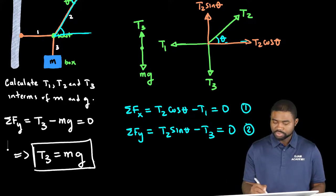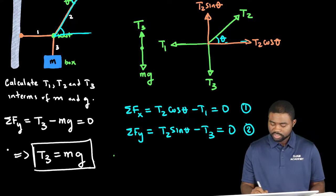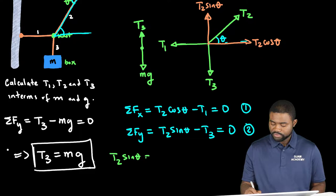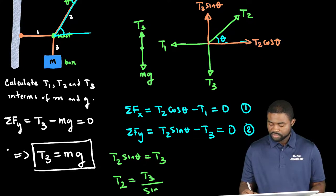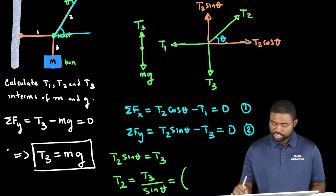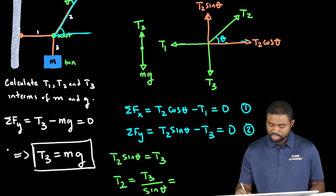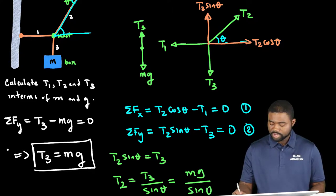From equation 2, you can see that T2 sine theta is equal to T3. In other words, T2 is equal to T3 divided by the sine of theta. But what is T3? T3 is just mg. So this means that T2 is equal to mg divided by the sine of theta.